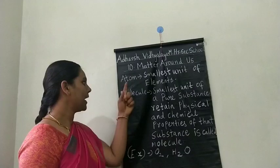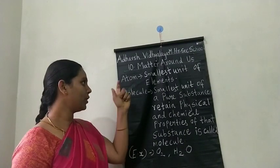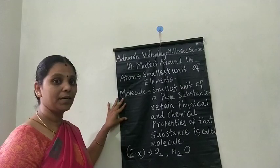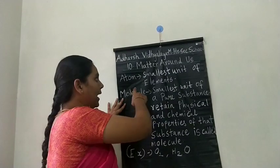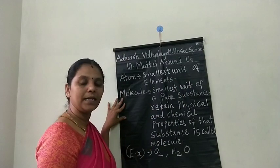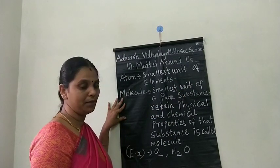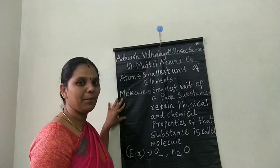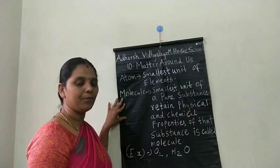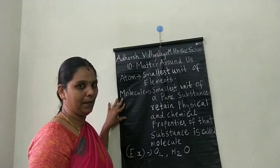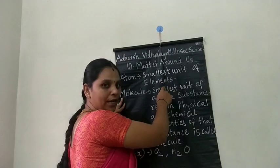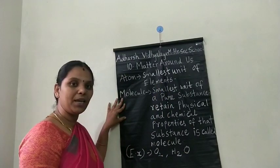Now we will see about atom and molecule. The definition of an atom: an atom is the smallest unit of an element which takes part in a chemical reaction. It may or may not exist independently.